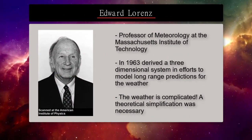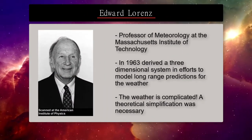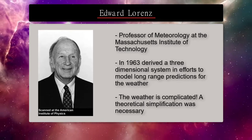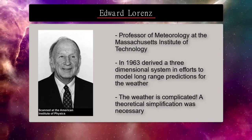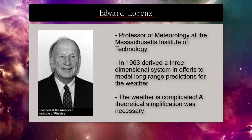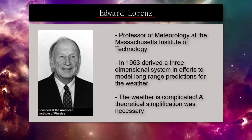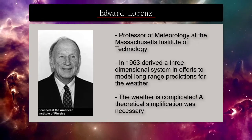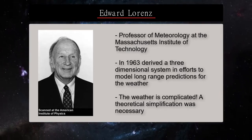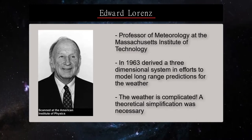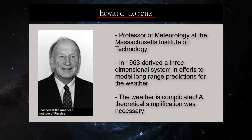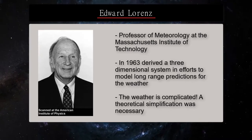In the early 1960s, Edward Lorenz, a professor at MIT, was working on developing a system to simplify the convection rolls in the upper atmosphere for long-range weather predictions. Long range means 5 plus days. The weather was complicated and is complicated, so we need a theoretical simplification. In 1963, he derived a three-dimensional system in an effort to model long-range predictions for the weather.